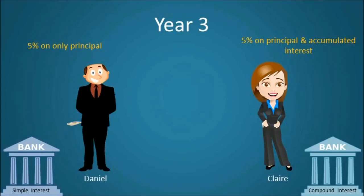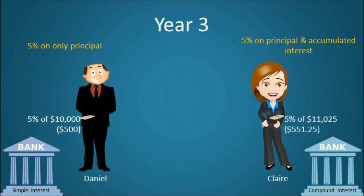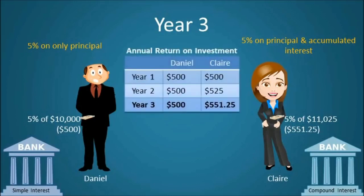In year 3, Daniel will once again make $500 on his principal investment of $10,000, bringing his total capital to $11,500. Claire, on the other hand, will make 5% of $11,025 in year 3 for an annual return of $551.25, bringing her total capital to $11,576.25. After only 3 years, Claire has made $76.25 more than Daniel, all due to compound interest.